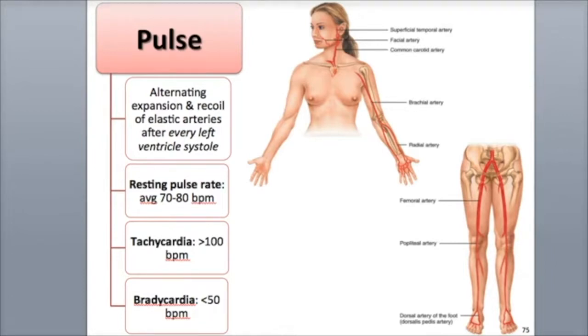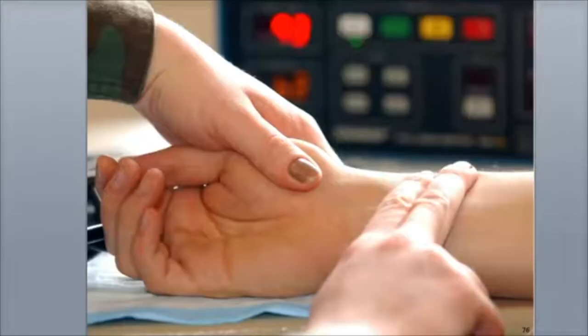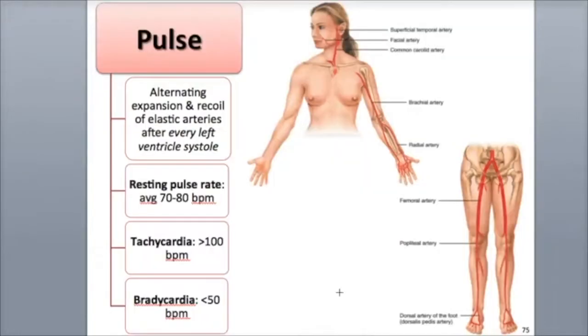Pulse can be measured in the more superficial arteries, located near the body's surface, that can be compressed against a bone. Some common pulse points where pulse rate can be measured include the radial artery of the wrist, as shown here, and the brachial artery of the upper arm.